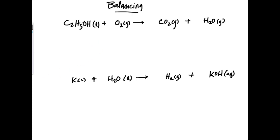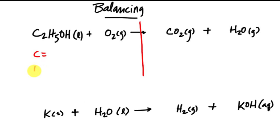So I have a couple here for you. If you want to, you can stop the video and pause it and try to balance this on your own if you feel like you've got a pretty good idea on how to balance. If not, watch the first one and then pause it for the second one and try to balance that one. So here's the strategy I do: I'll cut this reaction in half so I have my reactants and my products separated, then I'm going to list the elements — carbon, hydrogen, and oxygen.